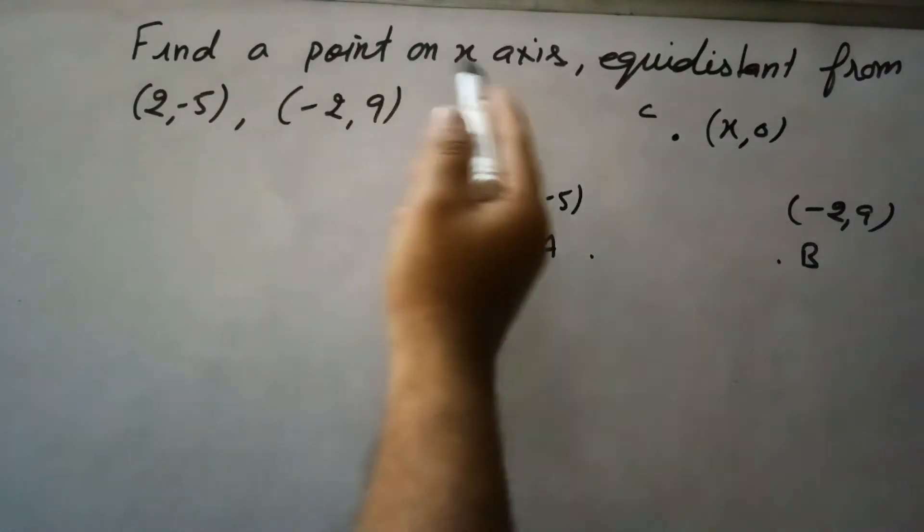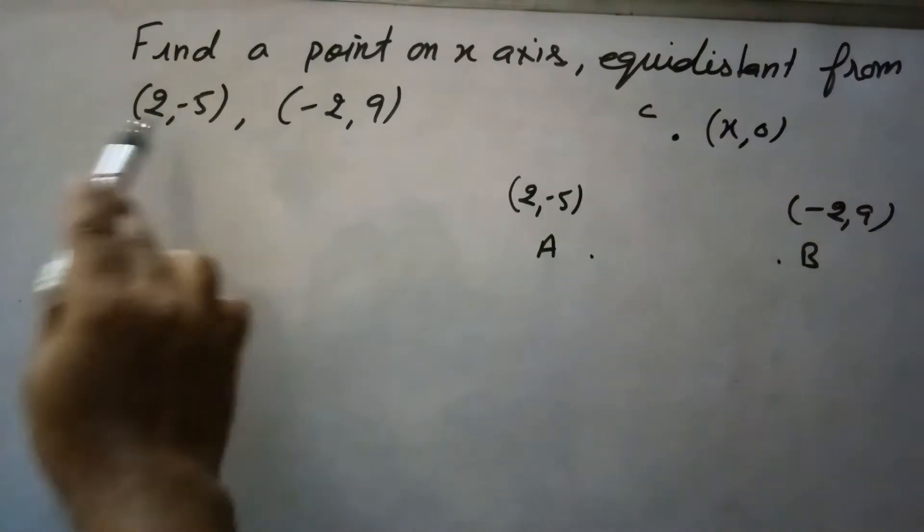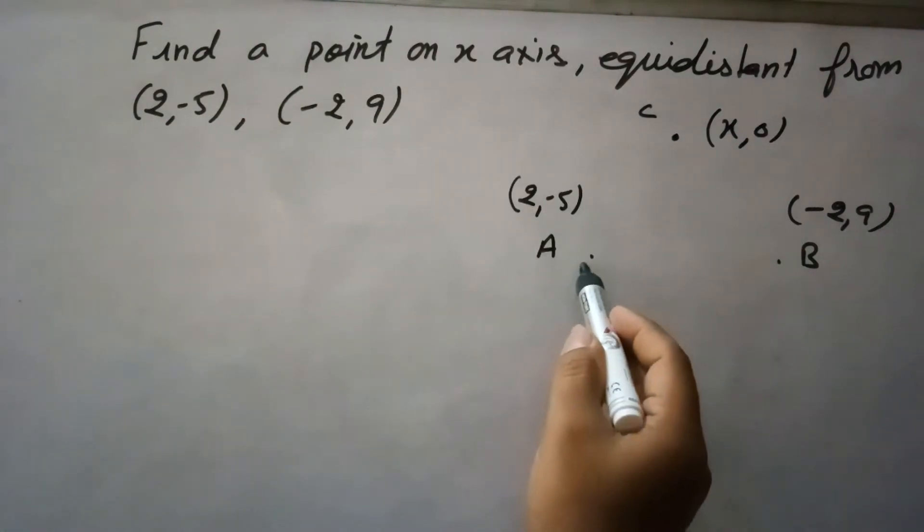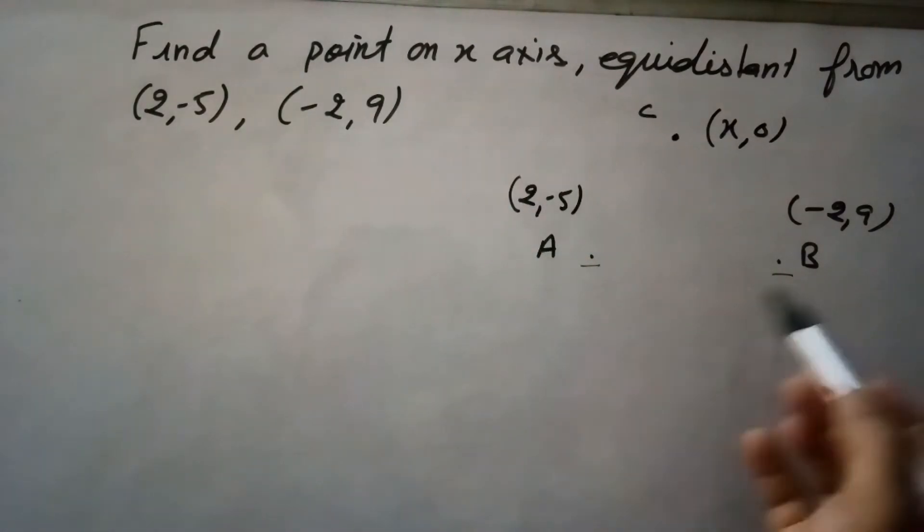This question is find a point on the x-axis which is equidistant from these two points: (2, -5) and (-2, 9). So I have drawn these here. Let this point be A and this point be B. Coordinates of A are (2, -5) and coordinates of B are (-2, 9).